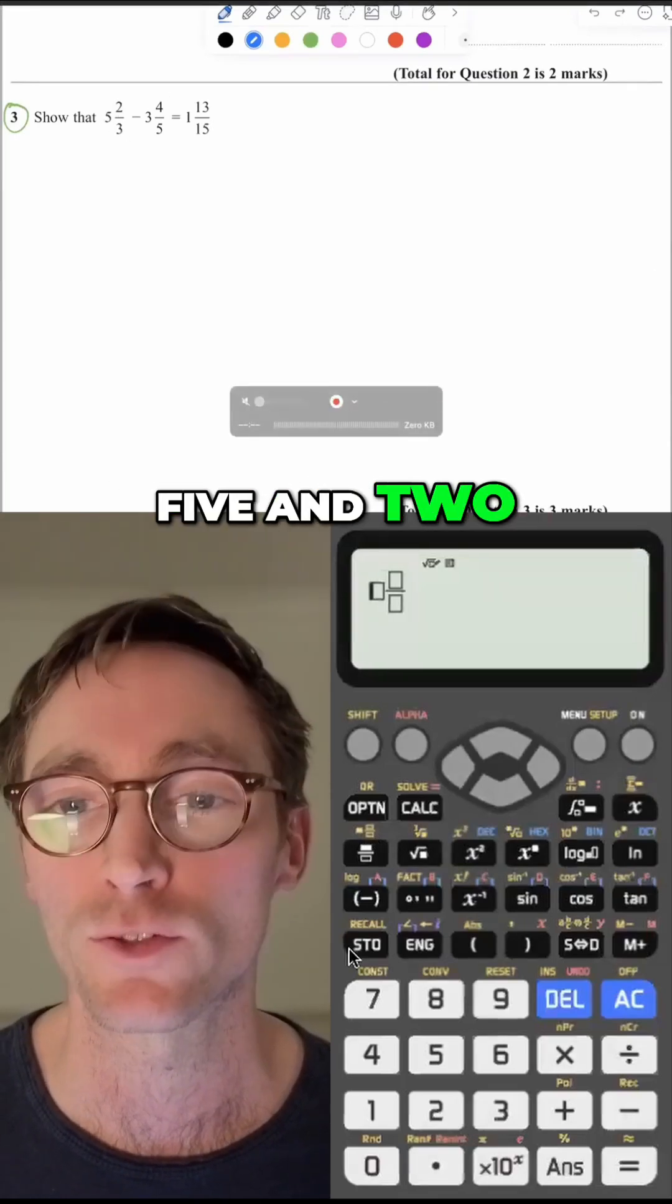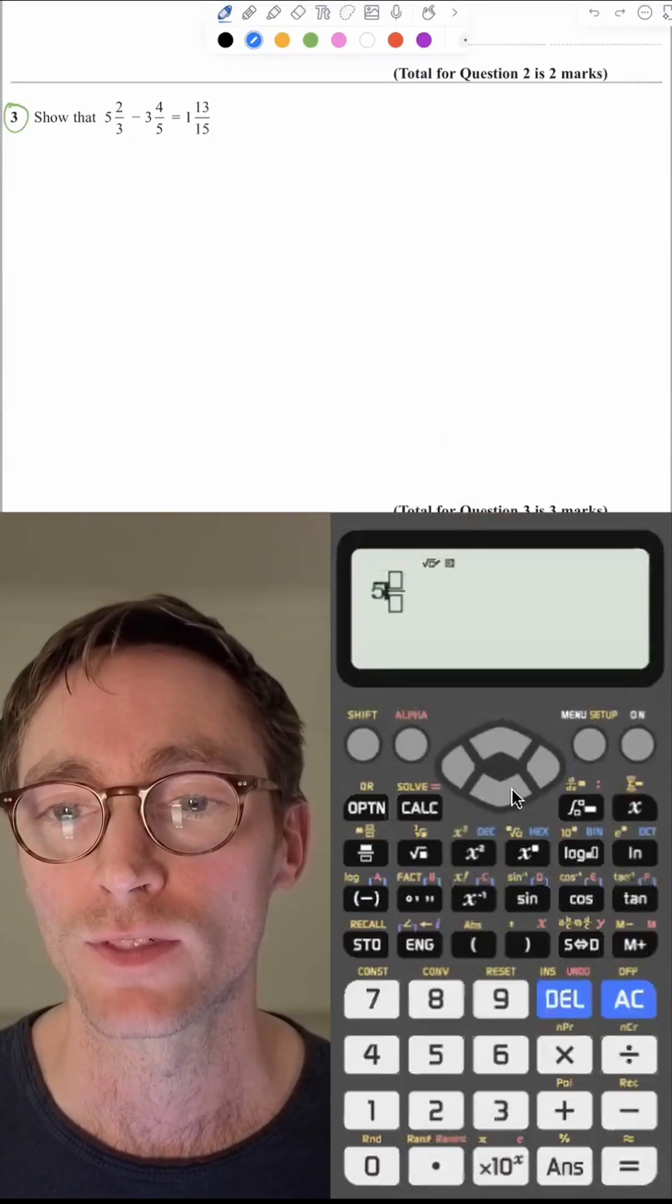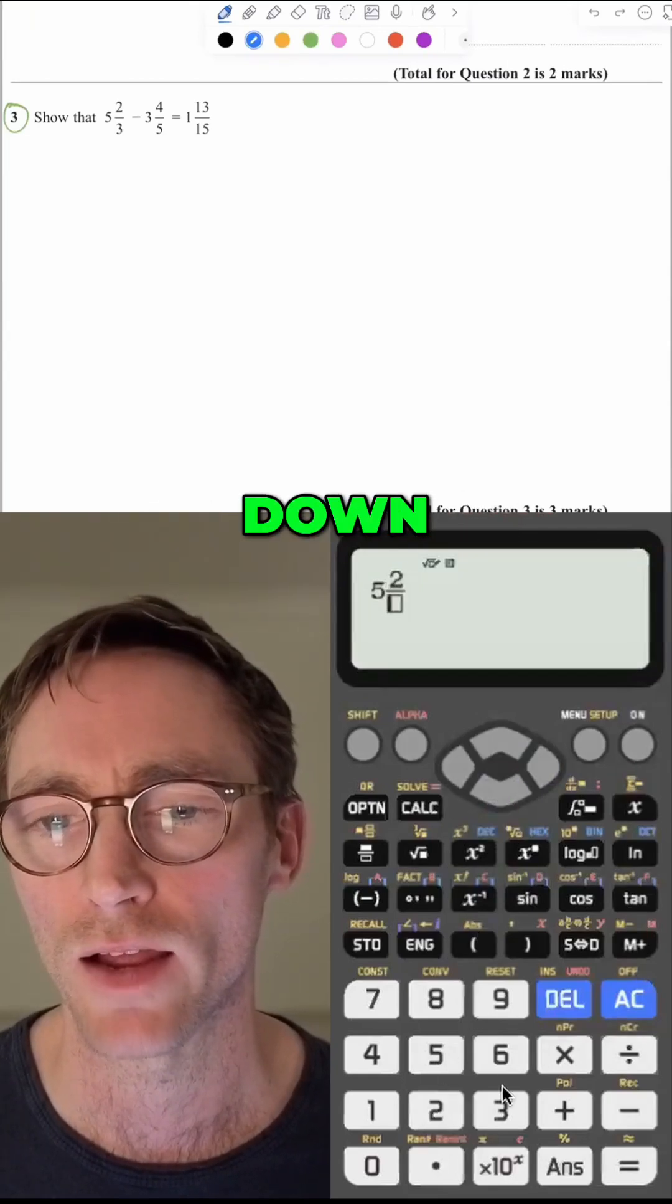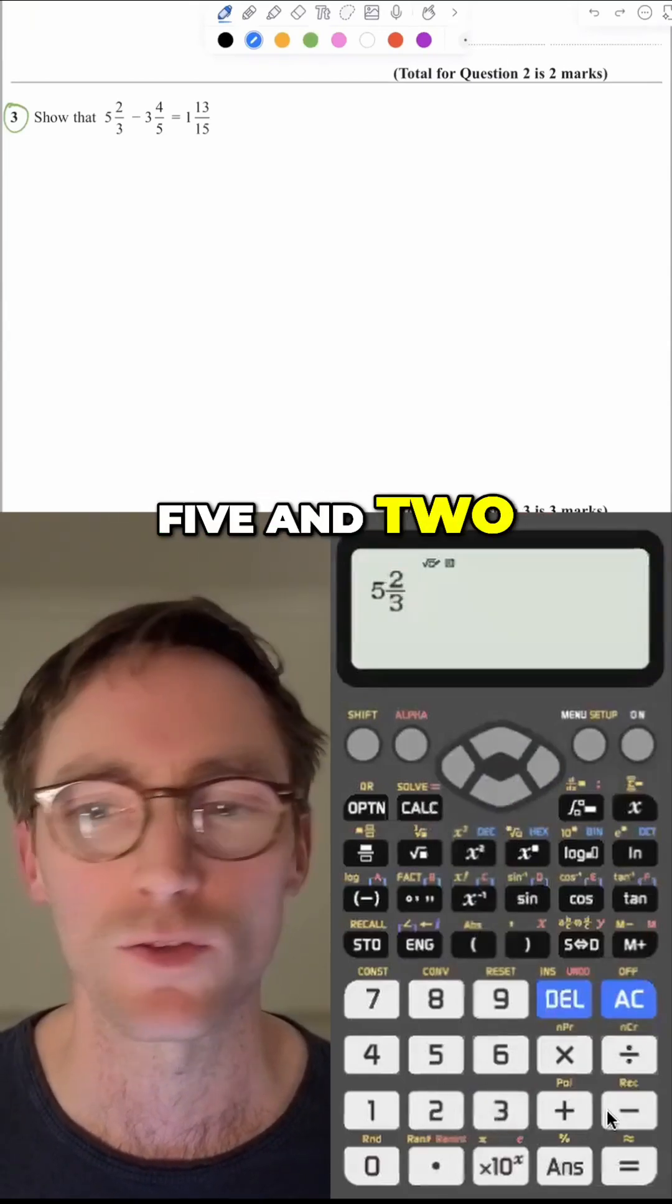Right? You're going to do 5 and 2 thirds. We're going to hit 5 and you're going to hit right. Or do you hit down? I don't know. 2, hit down. Well, you figure it out. 5 and 2 thirds and then you hit equals.